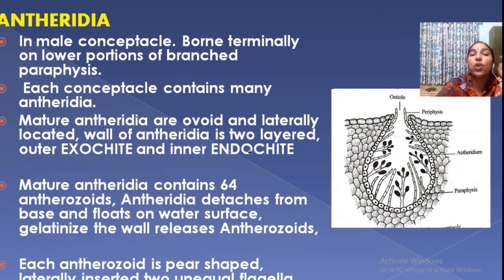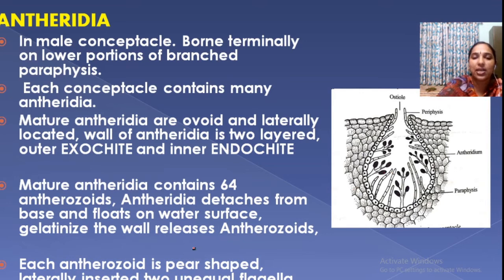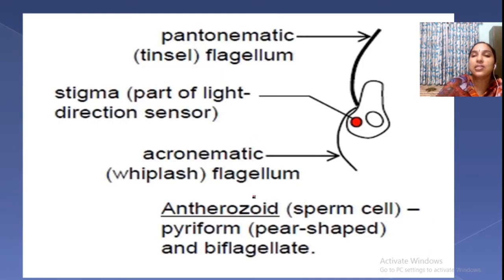A mature antheridium contains 64 androzoids. These 64 androzoids are released — they are flagellated, with two equal flagella: one tinsel flagellum and one whiplash flagellum. The androzoids are pear-shaped.